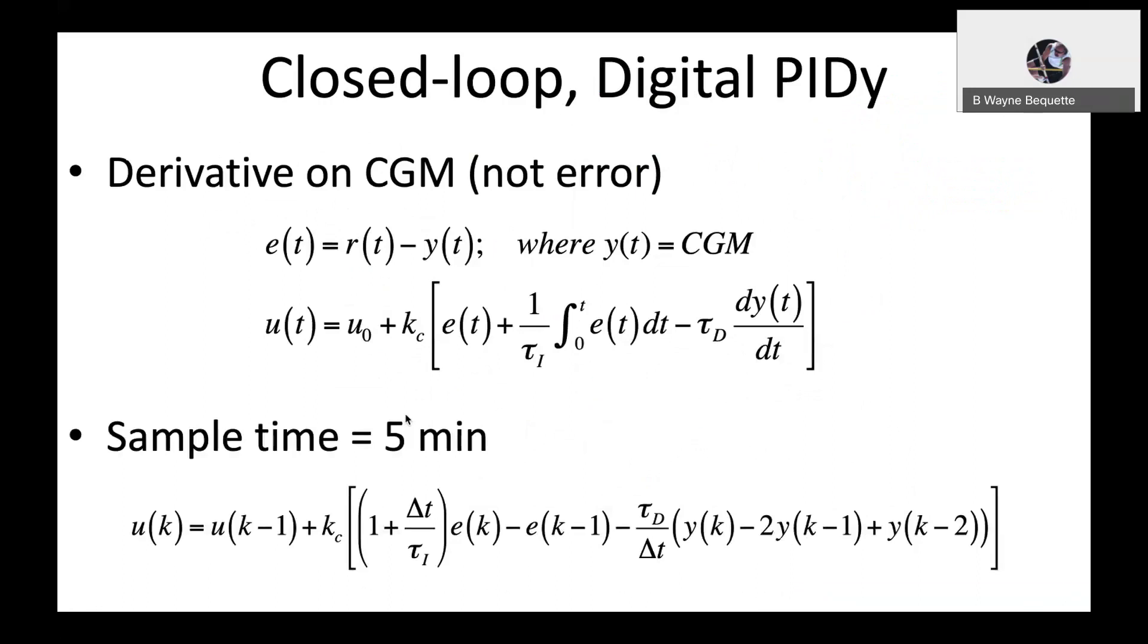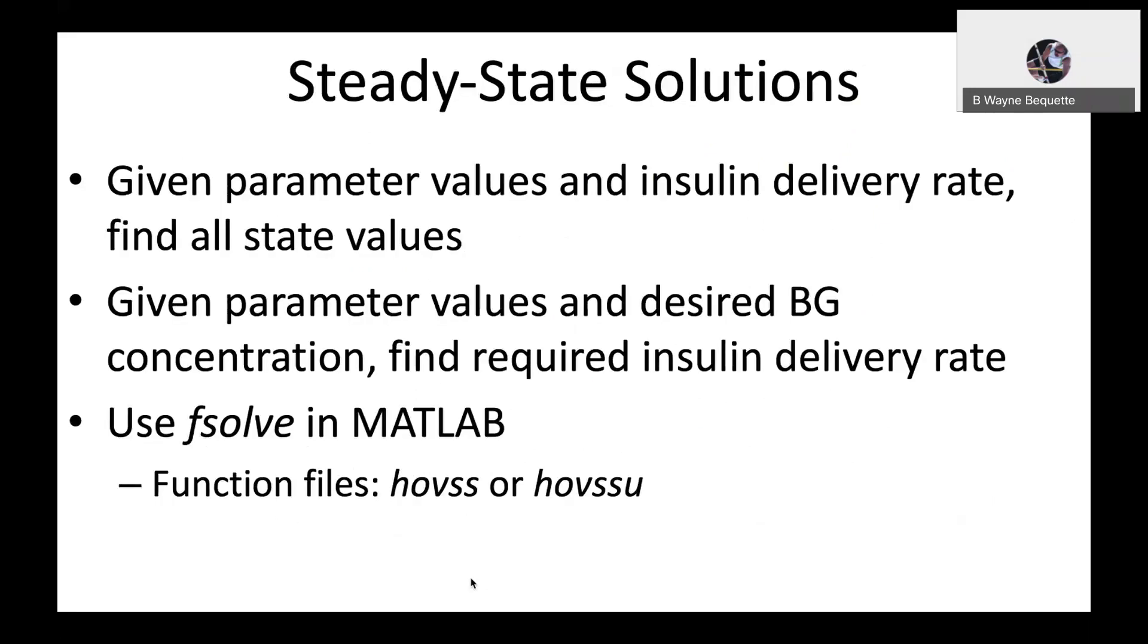The closed-loop controller is a digital PID. The derivative is on the measured glucose signal and not on the error. I show both the continuous representation as well as the discrete representation that's actually implemented. We use a sample time of five minutes.